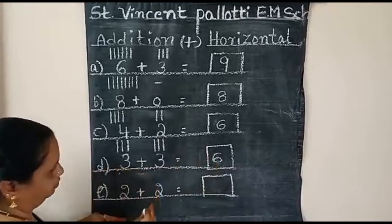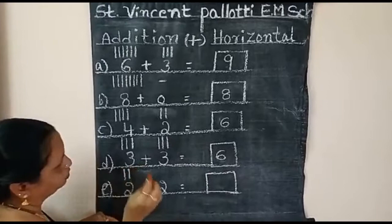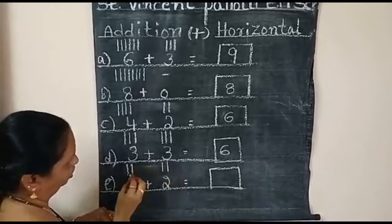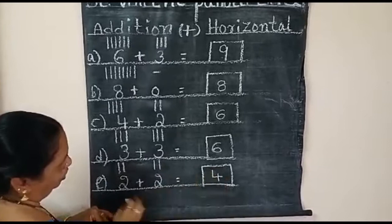Here two. How many lines draw here? Two. This number also two. Again draw two lines. Now count: one, two, three, four. Answer is four. Two plus two is equal to four.